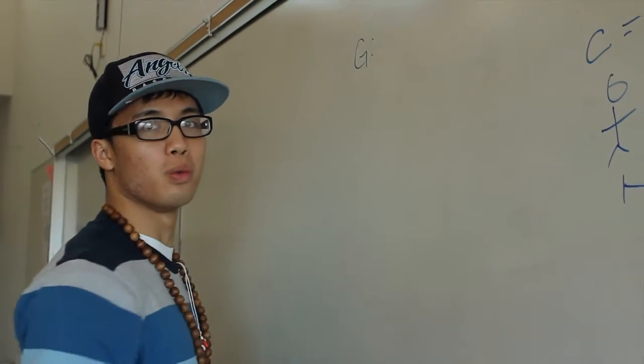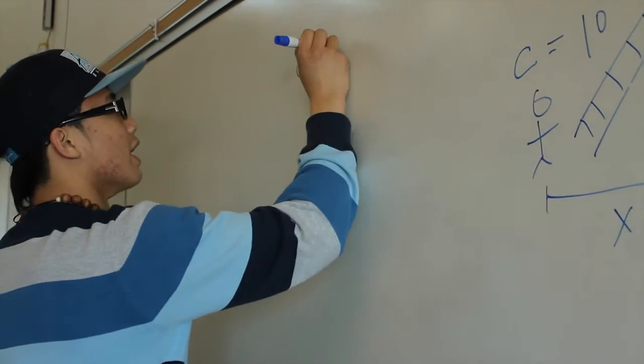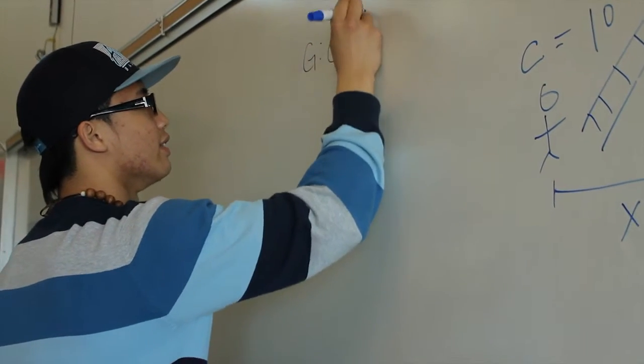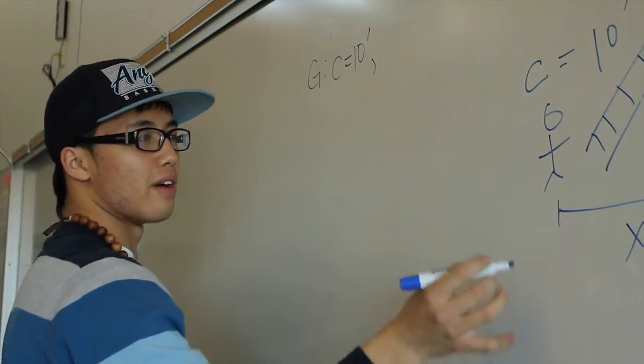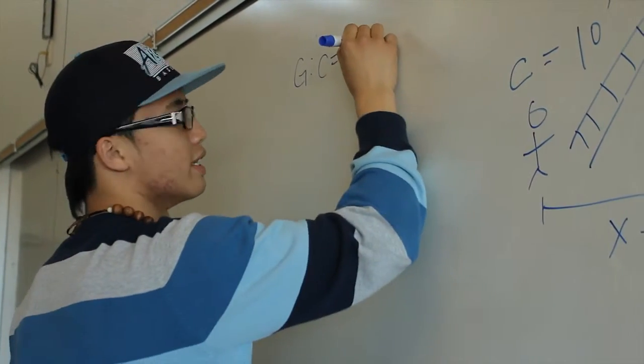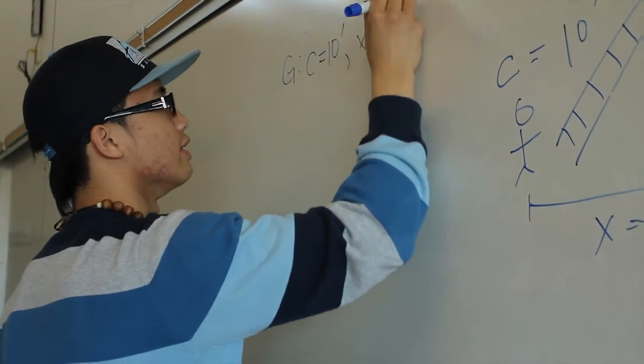Step one, what are the givens? We have the ladder is 10 feet long, which is a constant, and will be elaborated on later. We have his partner, which is a distance of 6 feet away.